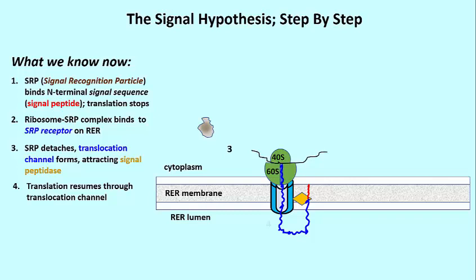So far, we have the first part of the signal hypothesis ending with the SRP detaching and translation now able to resume with the protein being guided through the translocation channel into the lumen, the space, in the RER.